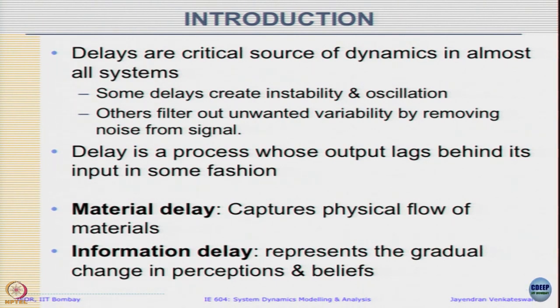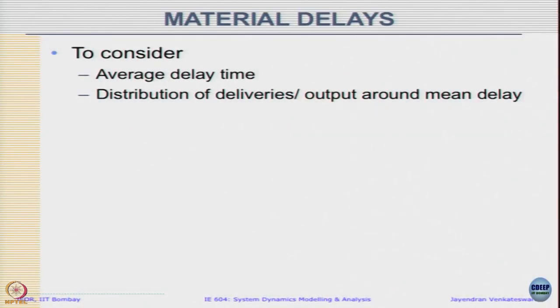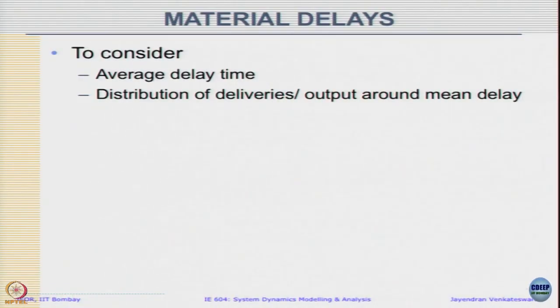Some form of both types you might have seen in other courses. Today's class we will start with material delay, which is easier to grasp. In system dynamics, when we model material delays, we consider two things: one is the average delay time, and the other is the distribution of deliveries or output around this mean delay. For example, if I send letters and after a delay of about a week some letters are delivered after 3 days, some after 4, some after 5 — there is a distribution around the average time of delay. We want to know what the average time is and what the distribution around that average time looks like, and based on that we choose the kind of model we want.